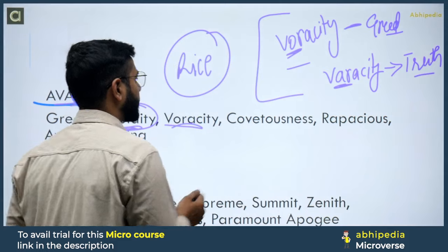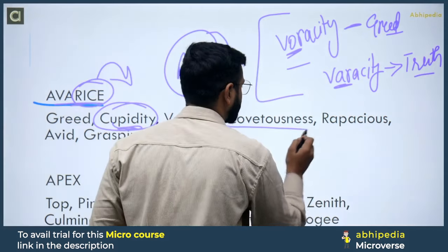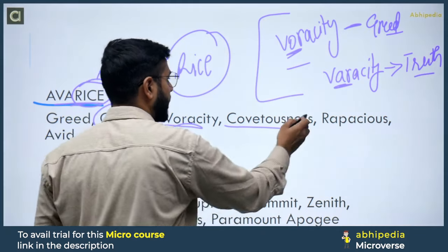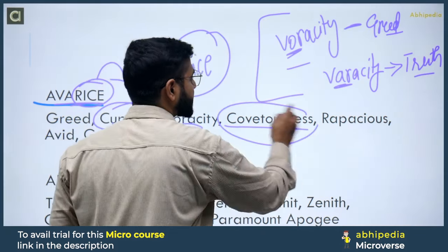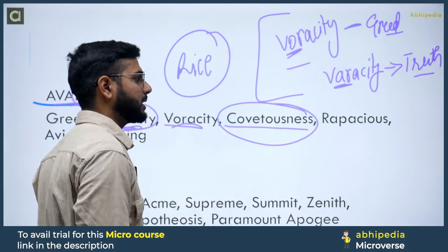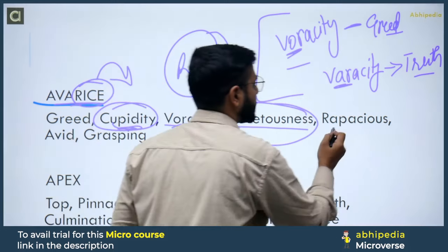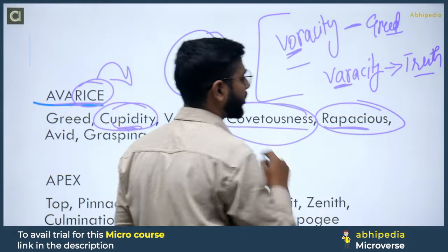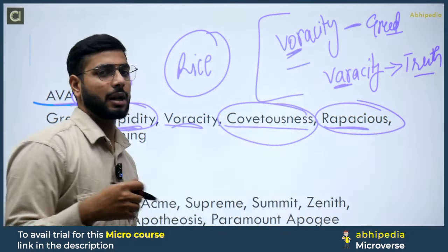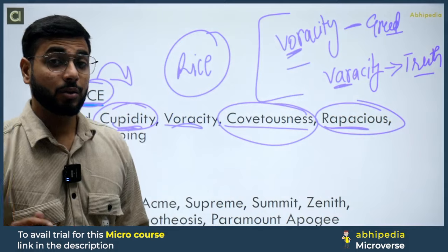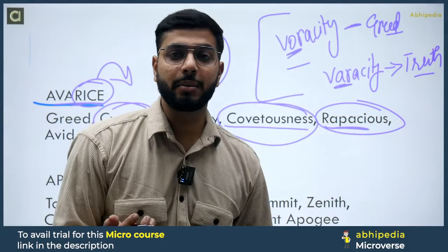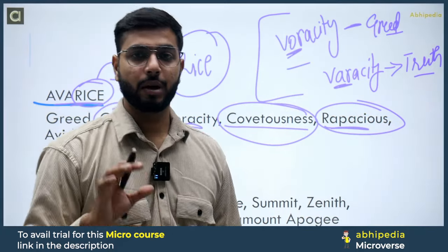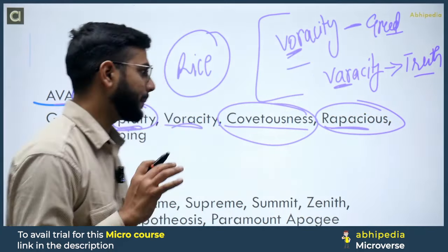Then comes Covetousness — its meaning is also Greed/लालच. Next is Rapacious. To remember Rapacious, think of someone who does Rap music and also has a greed for earning money from it. So Rapacious also means greedy.